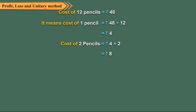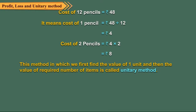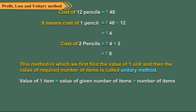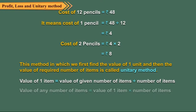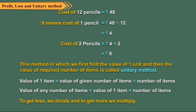To find the cost of 1 item, we divide. Using the cost of 1 item, we find the cost of the required number of items by multiplying. This method, in which we first find the value of 1 unit and then the value of the required number of items, is called the unitary method. To find the value of 1 item, we divide the value of the given number of items by the total number of items. To find the value of any number of items, we multiply the value of 1 item by the number of items. Note: to get less, we divide; and to get more, we multiply.